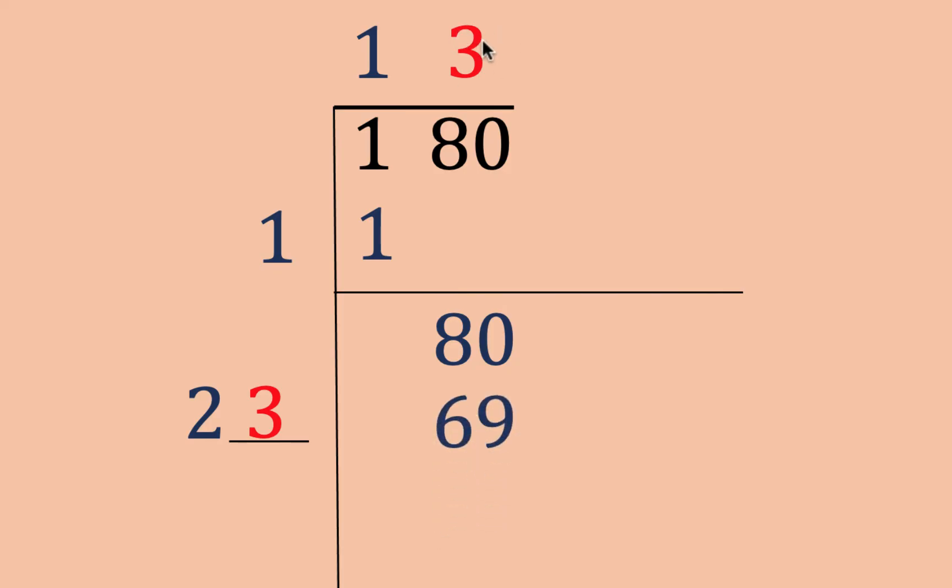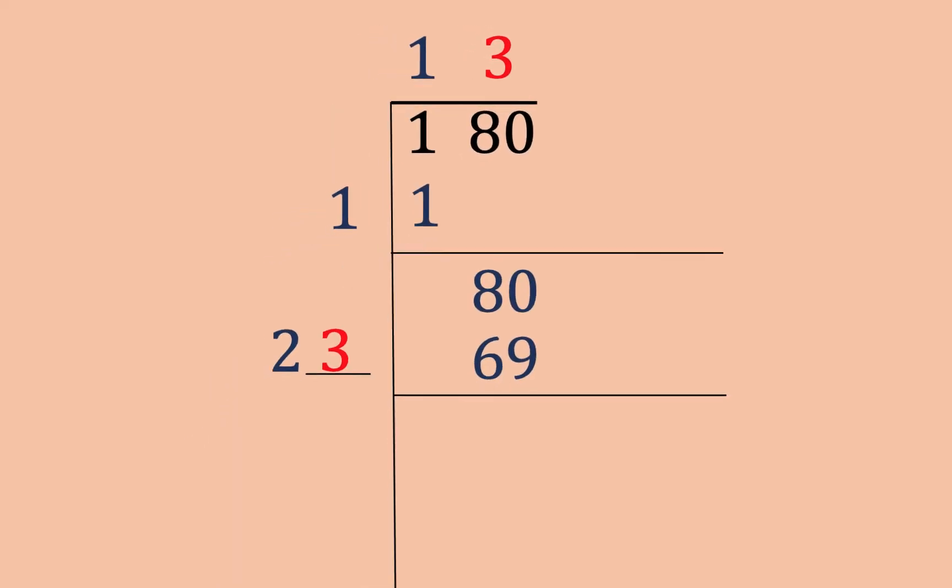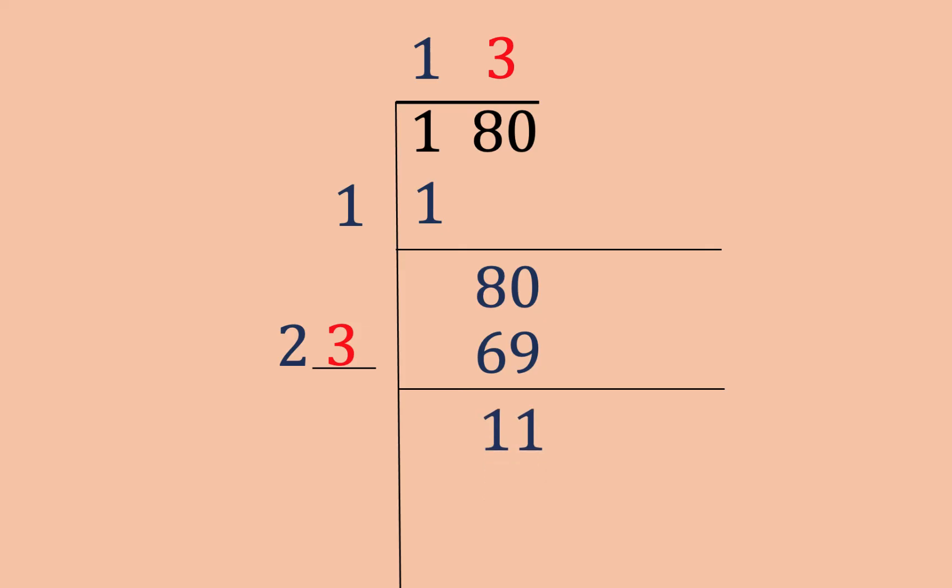That number must be 3 because 3 times 23 is equal to 69. If we take 4, 4 times 24 is already more than 80. So it's a trial and error. Then subtract. 80 minus 69 is 11. And since there is no more number to be brought down here, we know that there is a decimal point here. Let's put a decimal point here. And then put two zeros like this.